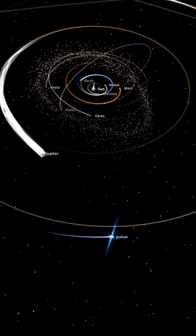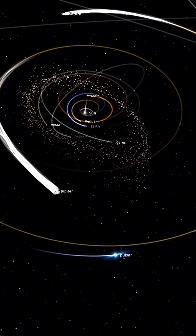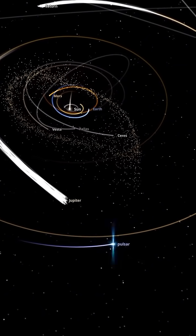Immediately, its immense gravity starts pulling on the sun. The sun moves toward the pulsar, dragging all the planets along with it.